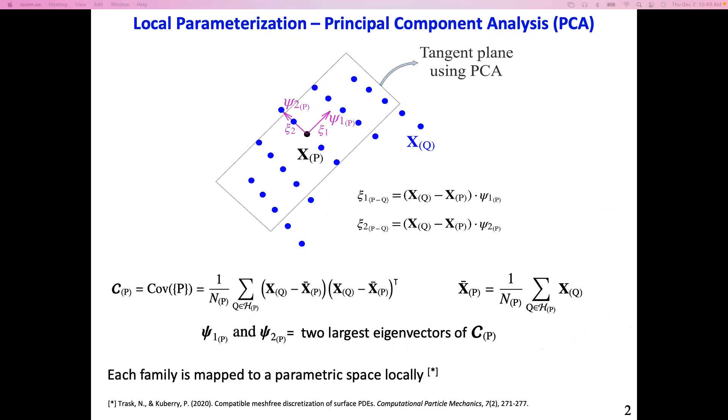We are dealing with thin shell elements, which typically have very small thickness values compared to other characteristic dimensions of the 3D body. For that reason, we are able to represent the motion of the 3D body using a 2D manifold embedded into this 3D space. We go ahead and discretize a mid-surface that represents the entire 3D body.